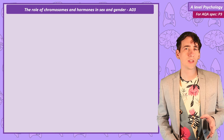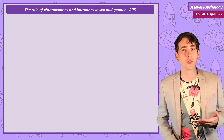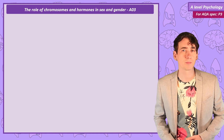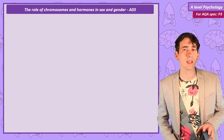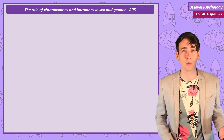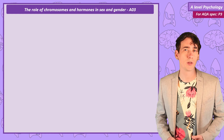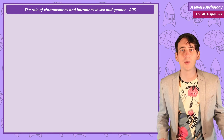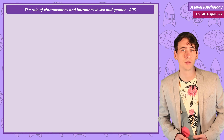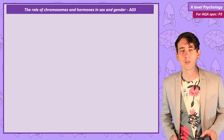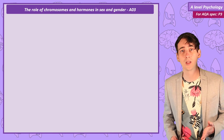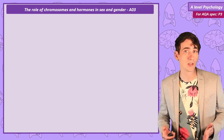If we're suggesting that gender is a biological process, then we can use biological evidence for atypical gender development to support that claim. Atypical gender is any individual whose gender identity doesn't follow the statistically typical male equals masculine, female equals feminine pattern. Another way of putting this is their gender identity doesn't match the sex assigned to them at birth. The next two evaluations can be used both for this section and for our final video in the unit where we cover atypical gender development.